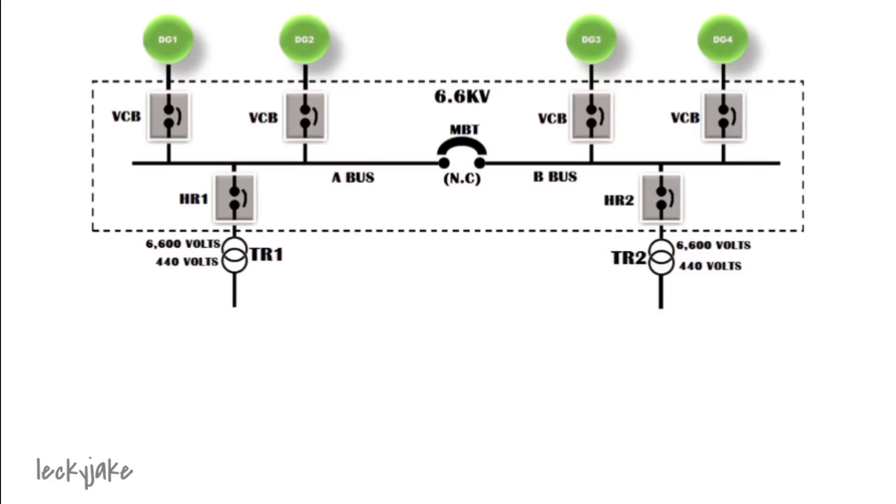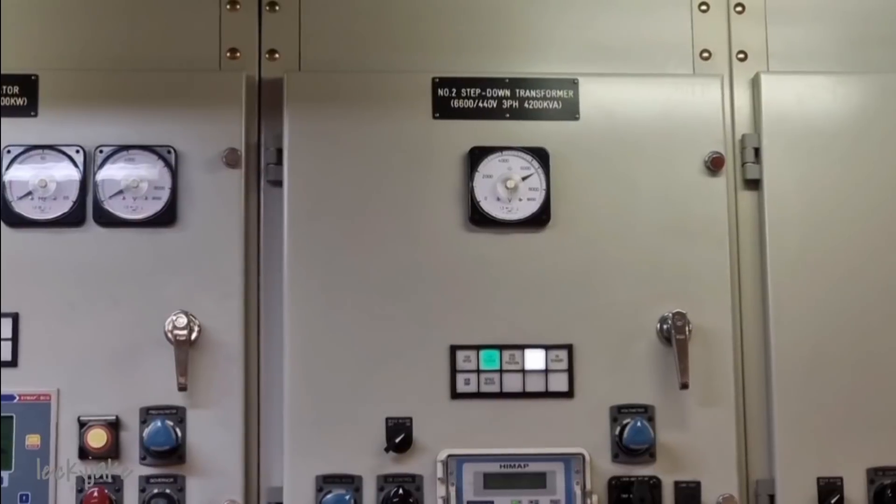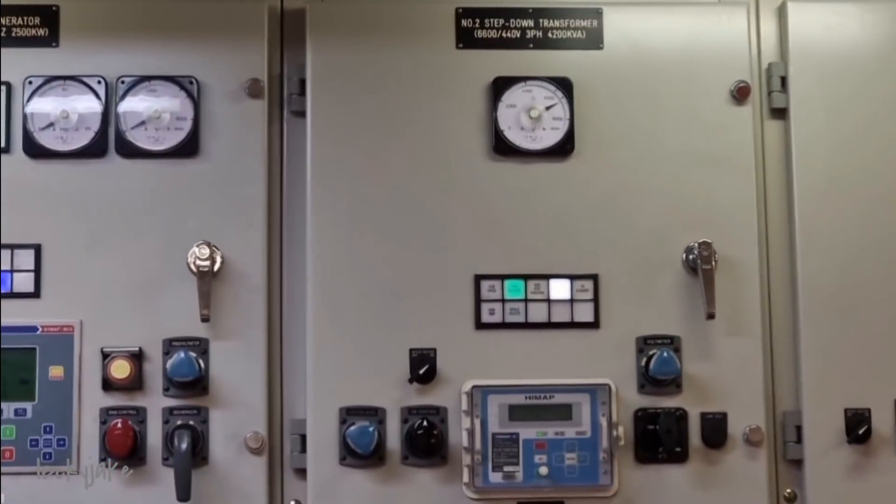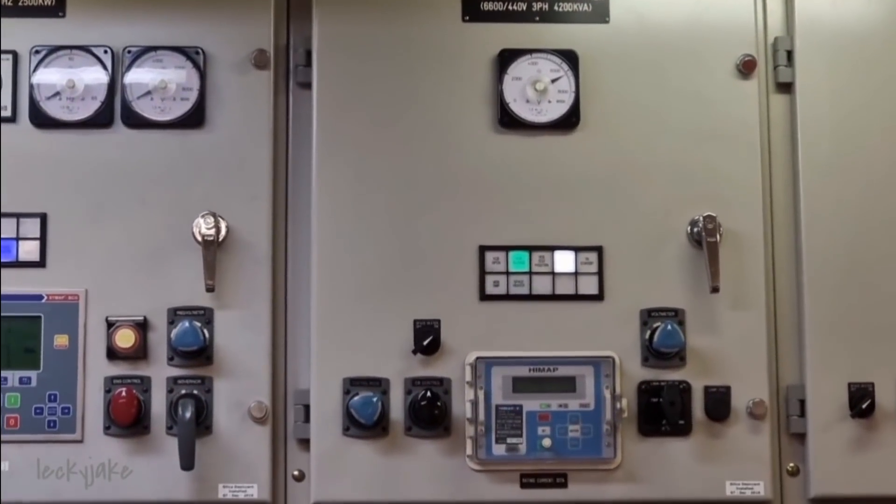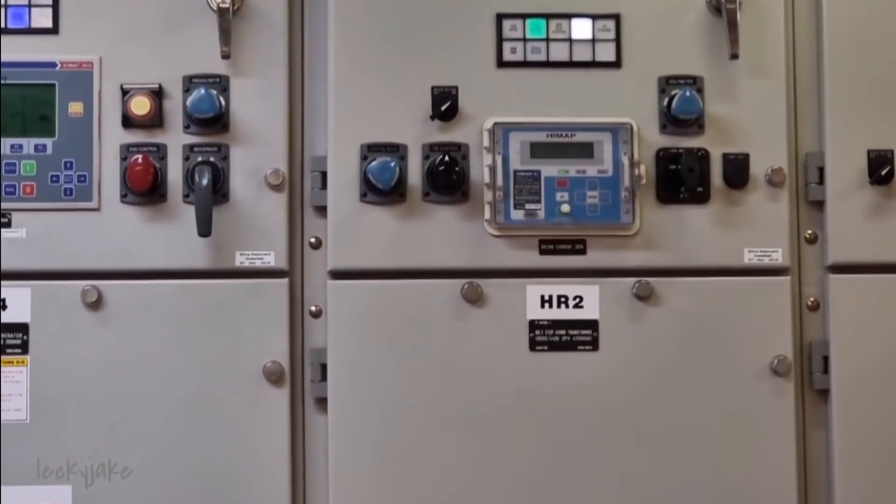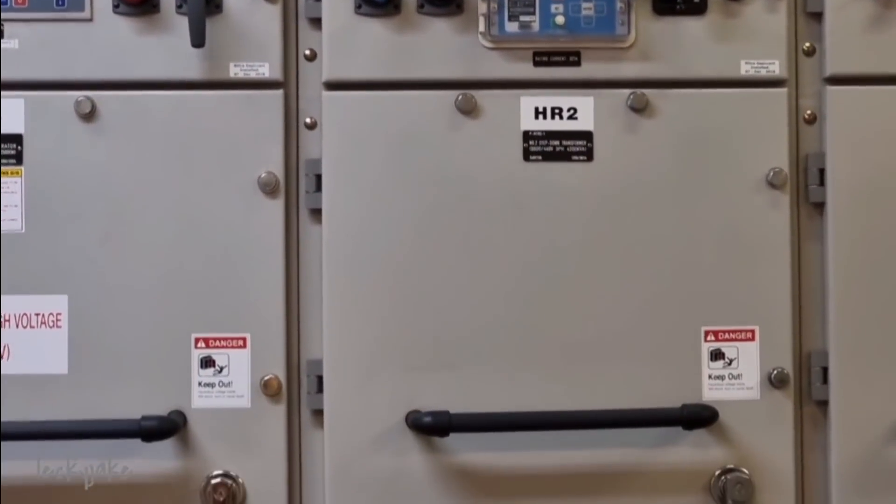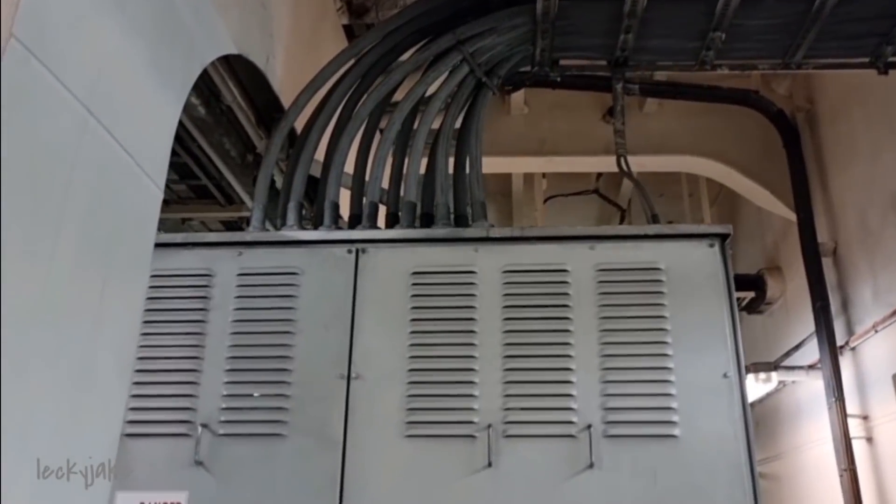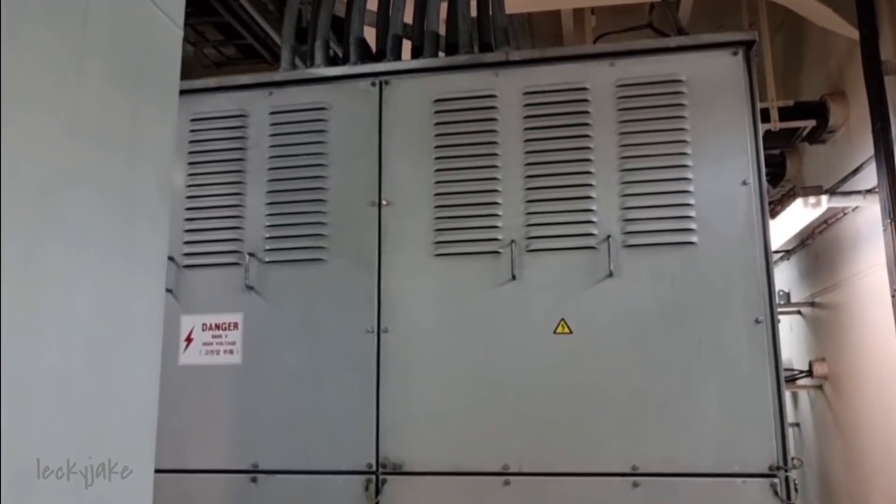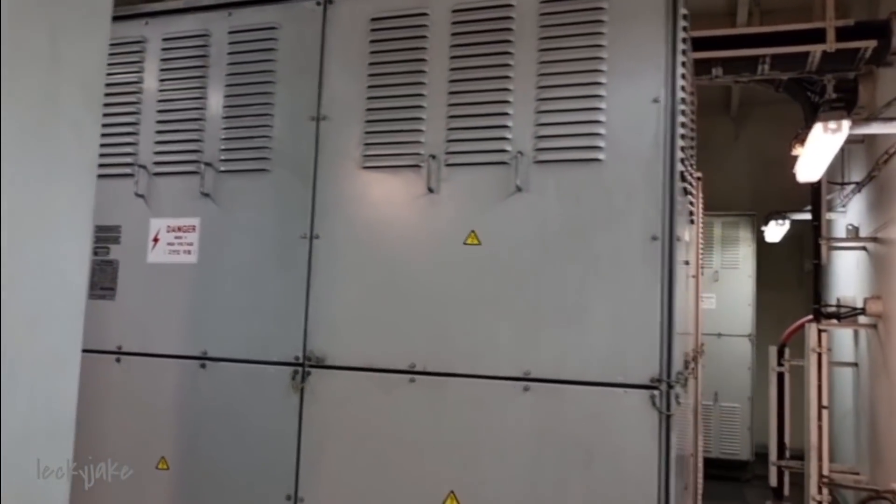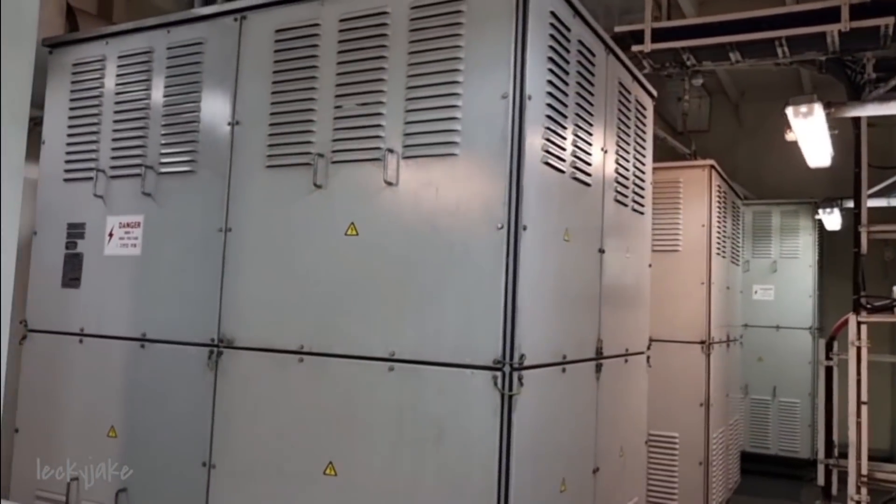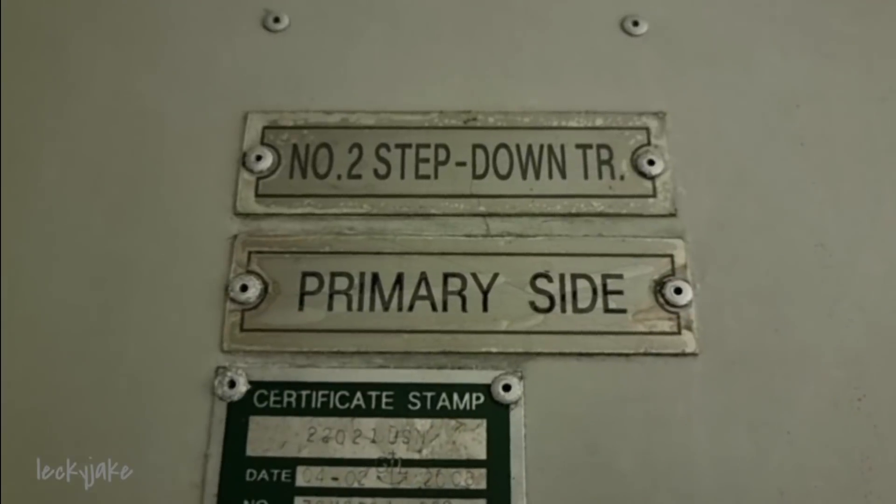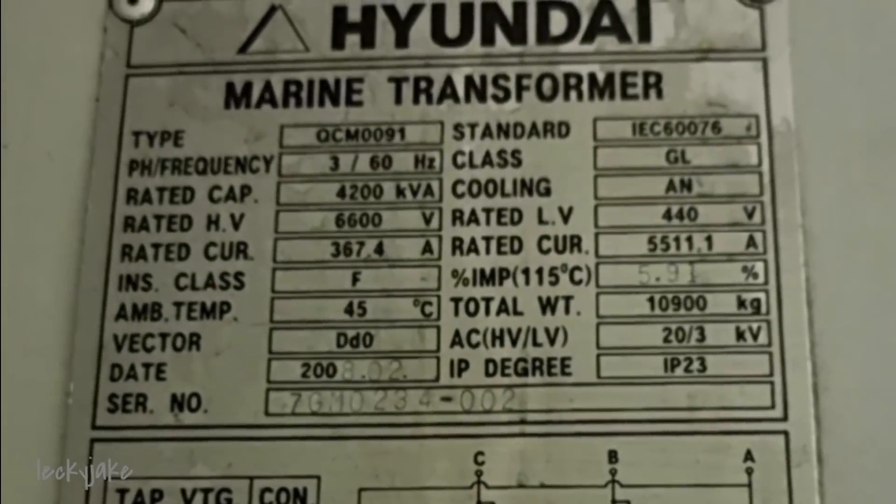The 6600 volts at the main switchboard is transformed down to 440 volts via two 6600 to 440 volts 4200 kVA transformers. This is to supply the main switchboard 440 feeder section. So this is how big the transformers which are located at the side of the engine control room.